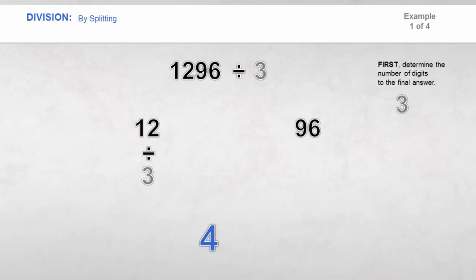Continuing to the second part, divided by 3. 96 divided by 3 is equal to 32. 96 has 2 digits, and 32 has 2 digits. The final answer contains 3 digits as determined here.